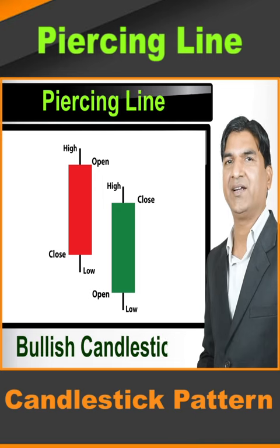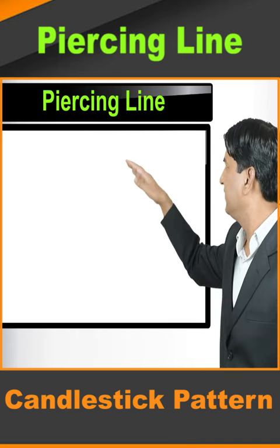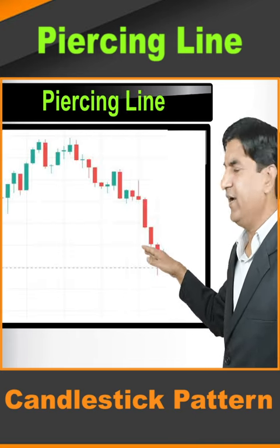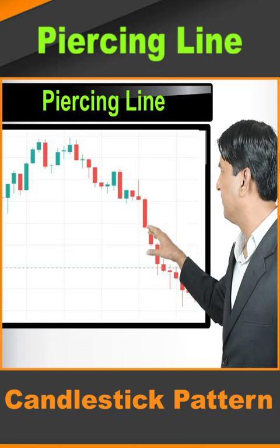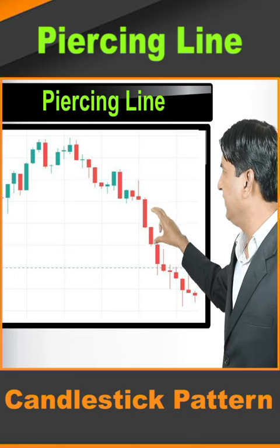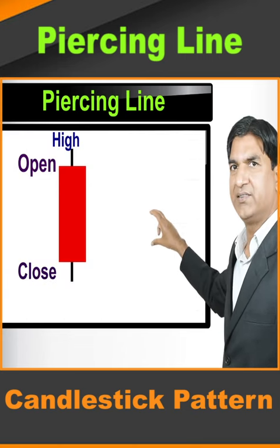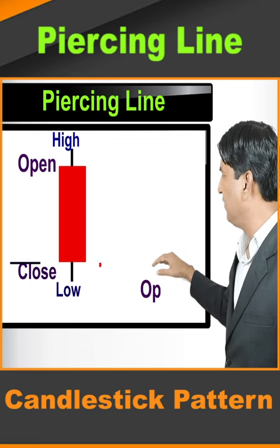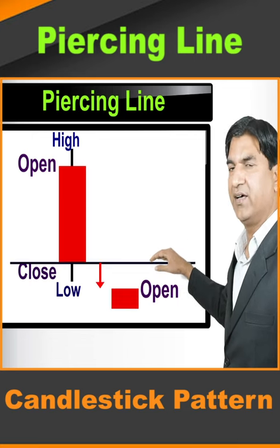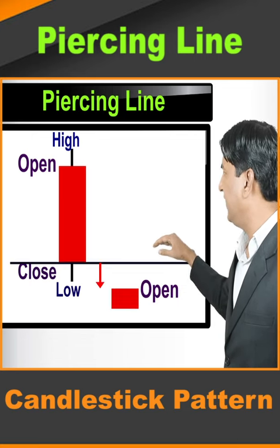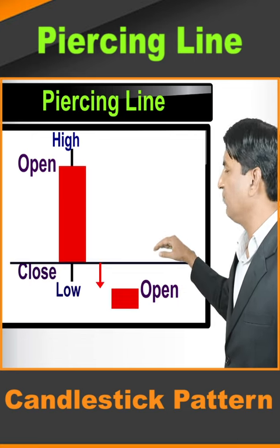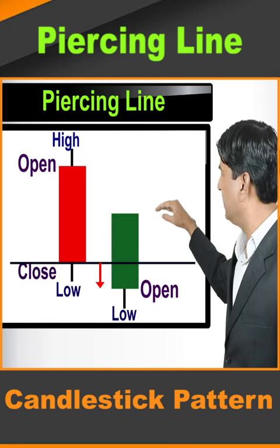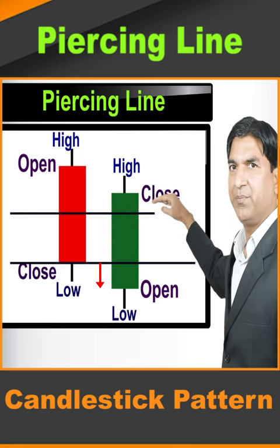Piercing line candlestick pattern: if there is a continuous downtrend and at the bottom there is a bearish candle, the next candle opens just below this bearish candle and that candle forms a bullish candlestick.